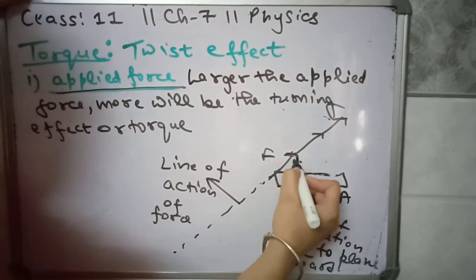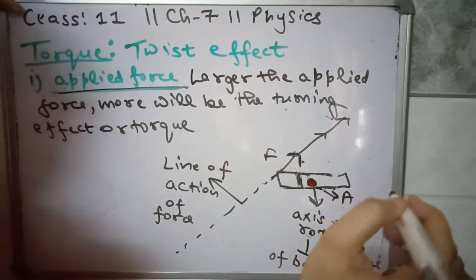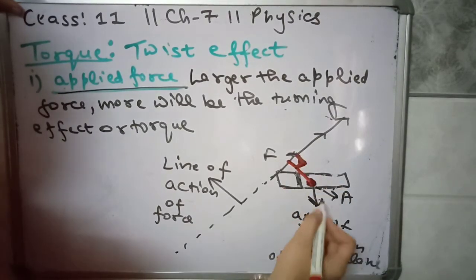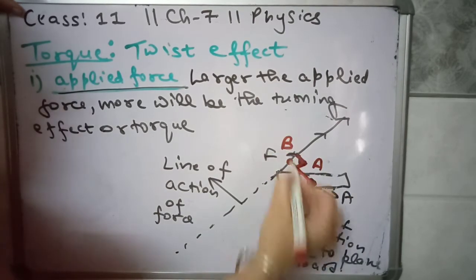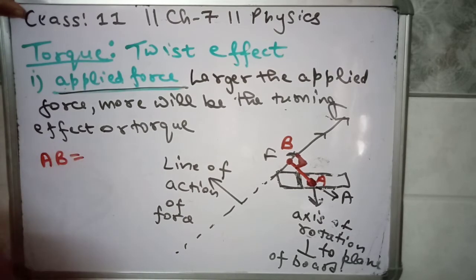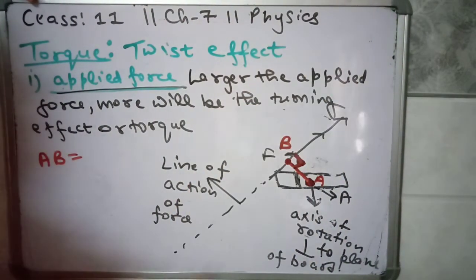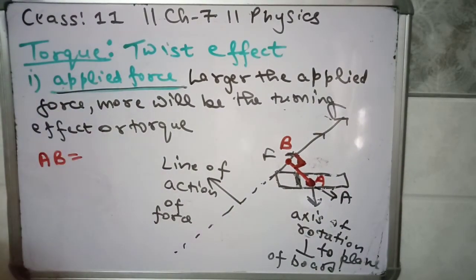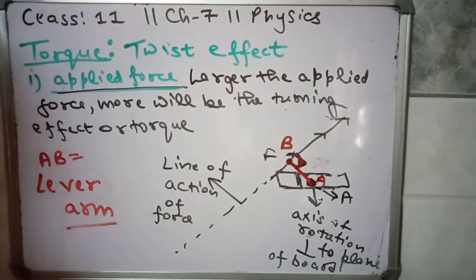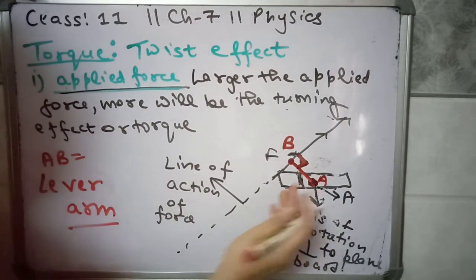The second factor for twisting effect: from the axis of rotation to the line of action of force, we drop a perpendicular. From point A, drop a perpendicular to the line of action of force. The length AB — this distance between the axis of rotation and the line of action of force — this is what we call the lever arm.